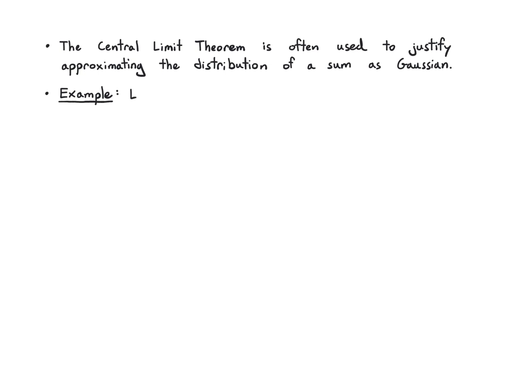What we will need is that the central limit theorem is often used as a justification for why it is okay to approximate the distribution of a sum, which we argued is kind of complicated to work out, as just a Gaussian. So as an example, let's say I have X₁ through Xₙ, and those are i.i.d. random variables,